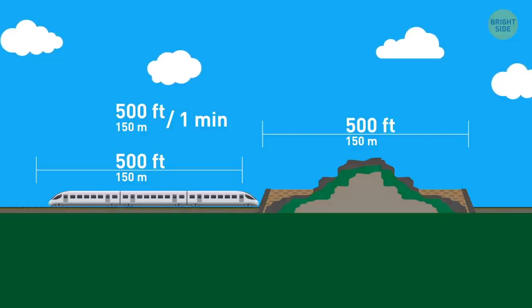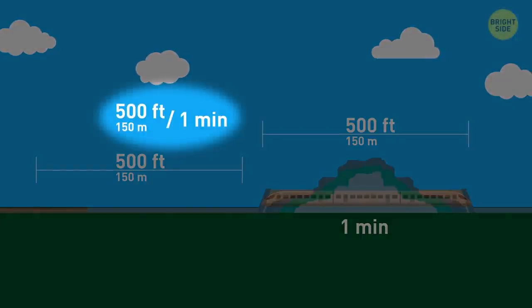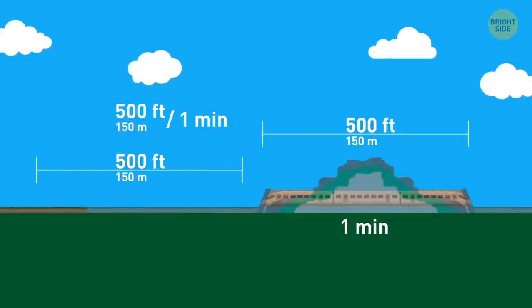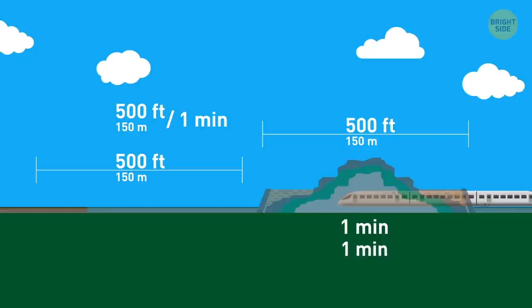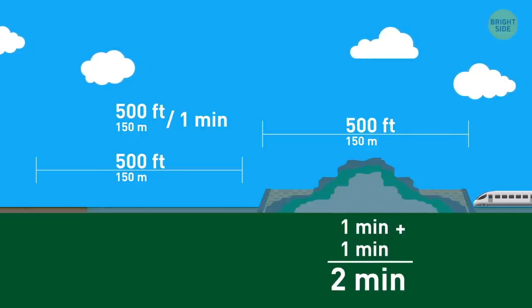When the train goes into the tunnel, it will take exactly one minute for its head to reappear on the other side. But the rest of the train should get out of there, too. Once the head of the train is out, the back of the train just entered the tunnel. And it'll need another minute to travel through the tunnel. So, the train will need two minutes in total.